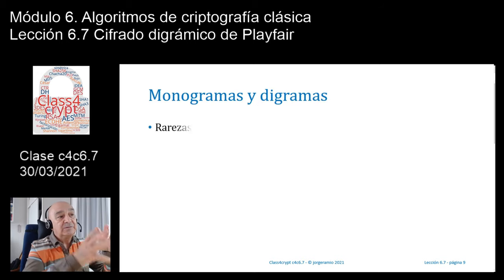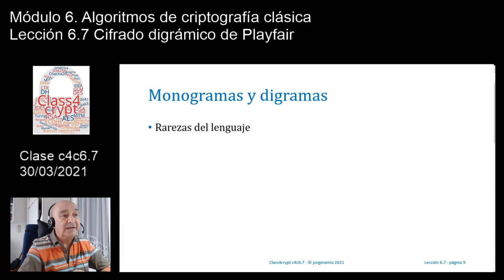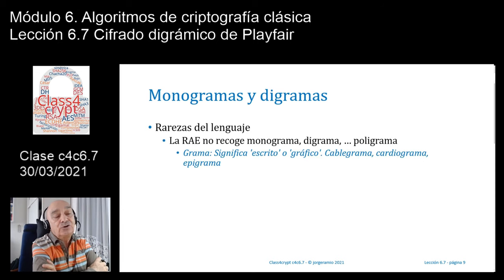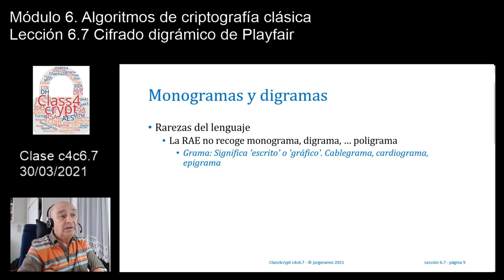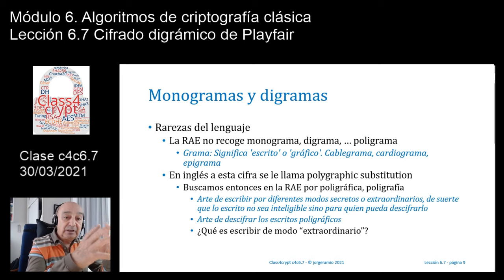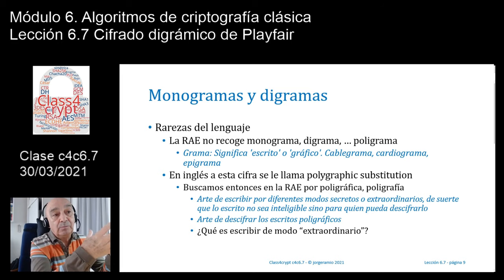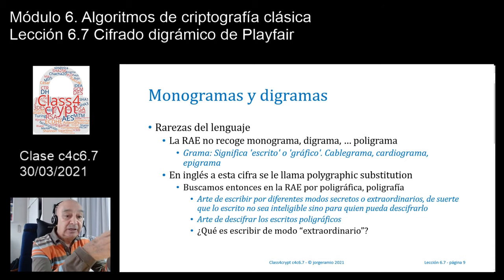Como decimos, monogramas y digramas. Vamos a ver que hay ciertas rarezas en nuestro lenguaje, básicamente en algunas definiciones que podemos encontrar en la RAE. La RAE, la Real Academia de la Lengua, nos recoge estas palabras: monograma, digrama o bigrama, trigrama, etc. En general, poligrama. Si vamos a la RAE, vemos que 'grama' dice que significa escrito o gráfico, y nos da algunos ejemplos como cable, grama, cardiograma, etc. Por el contrario, en inglés, este tipo de cifra donde se cifran grupos de dos letras, de tres letras, de cuatro letras, etc., se le llama cifra poligráfica, no poligrámica, aunque cuando hacen ataques estadísticos basados en pares de letras hablan de ataques bigrámicos.